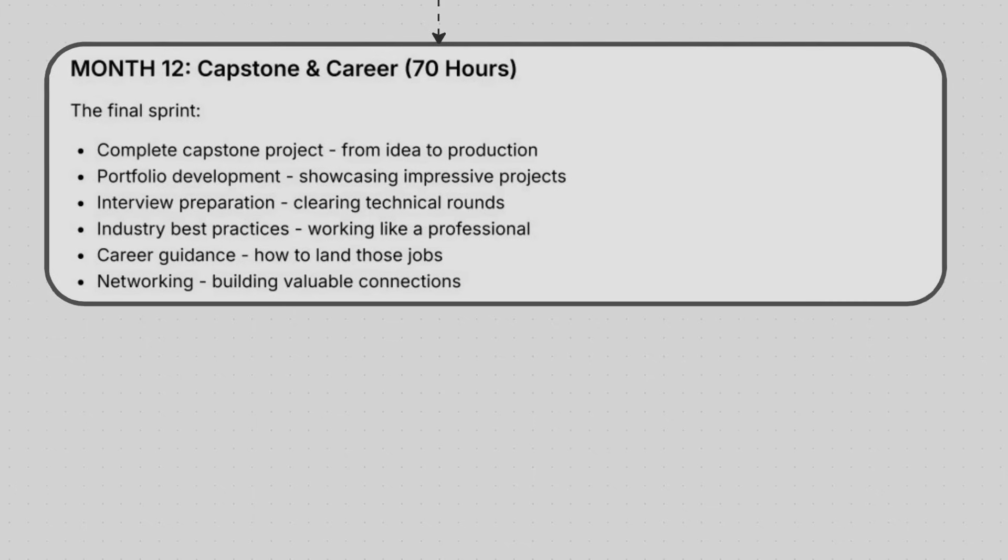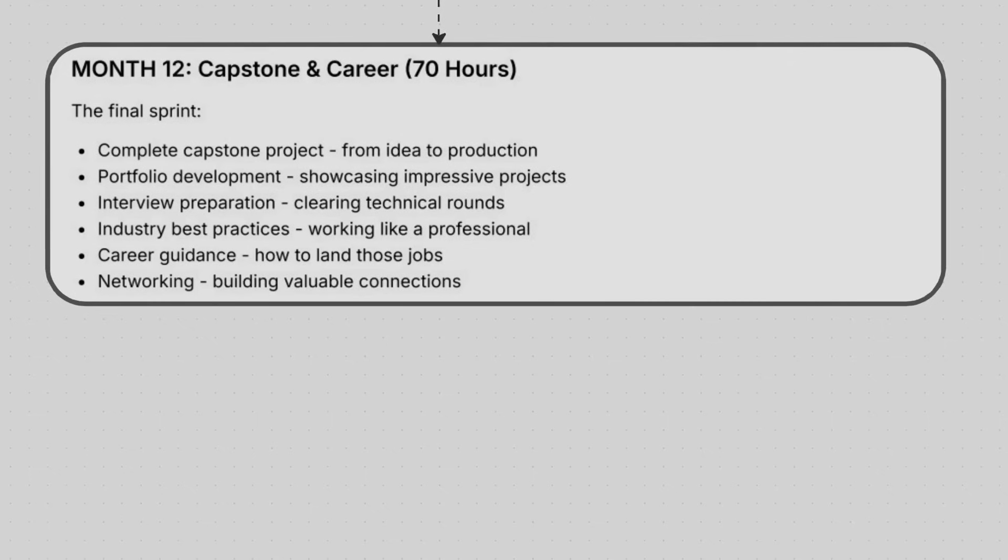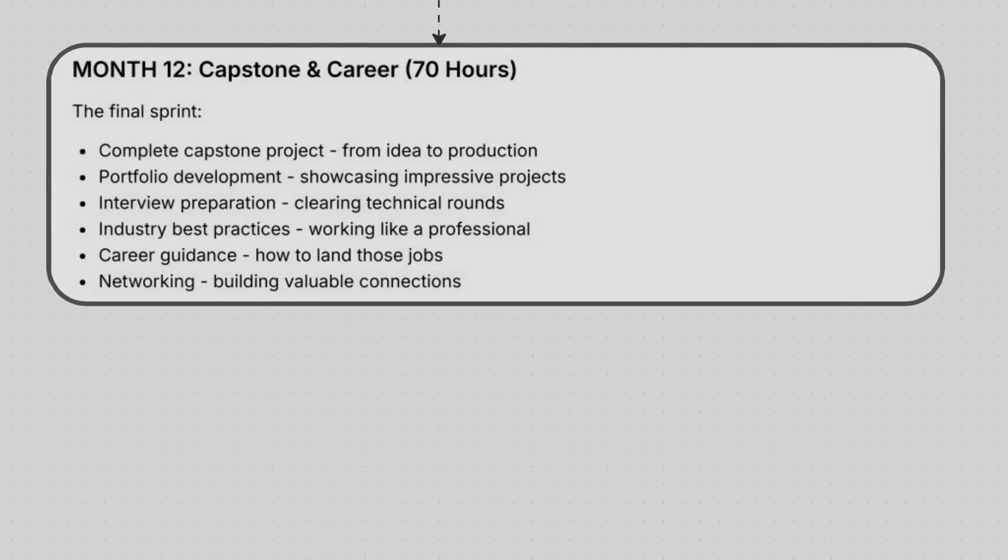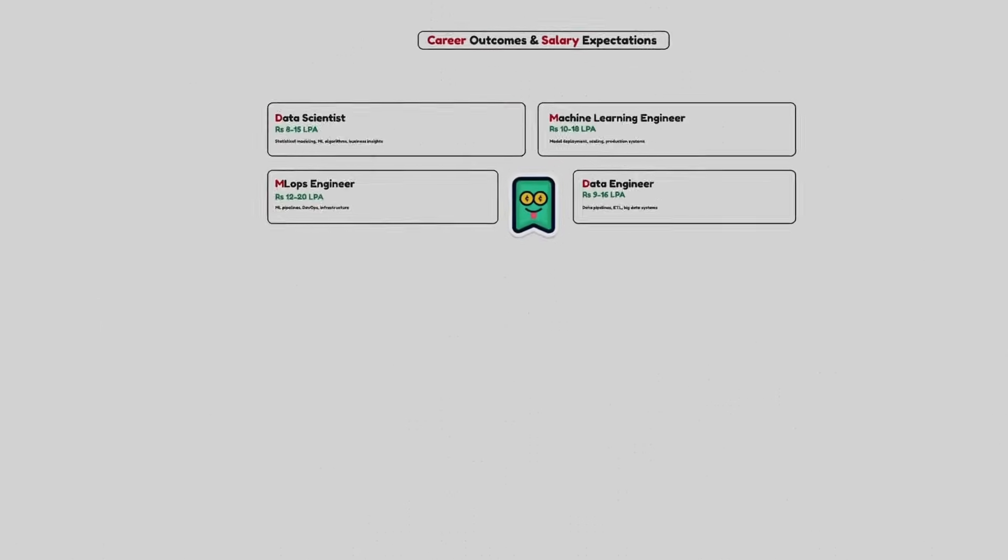And many students get confused that from where should I learn, what should be the roadmap. So I told you the roadmap, you just have to follow, and you could become the best data engineer, you can become a data analyst, you could become a data scientist. It depends upon you and the amount of effort that you will be paying in this entire course.